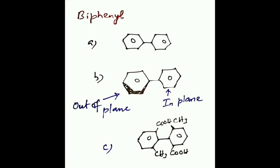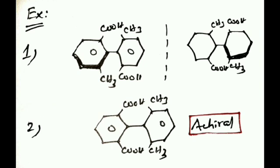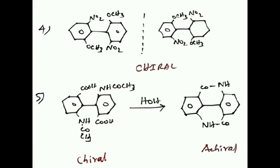In compound C, you can see in the ortho position there are bulky groups on both benzene rings. This causes restricted rotation with no plane of symmetry because the groups are diagonally opposite. Therefore it is a chiral molecule.